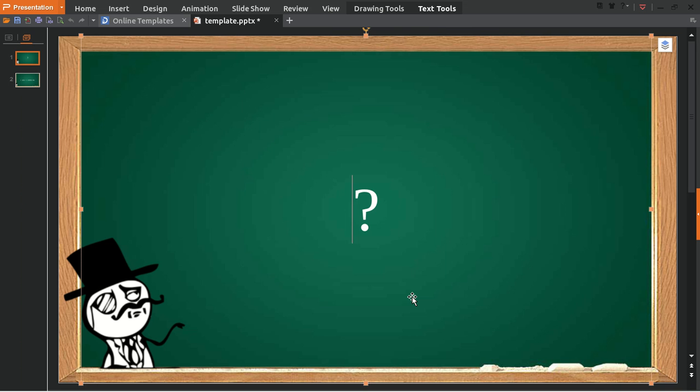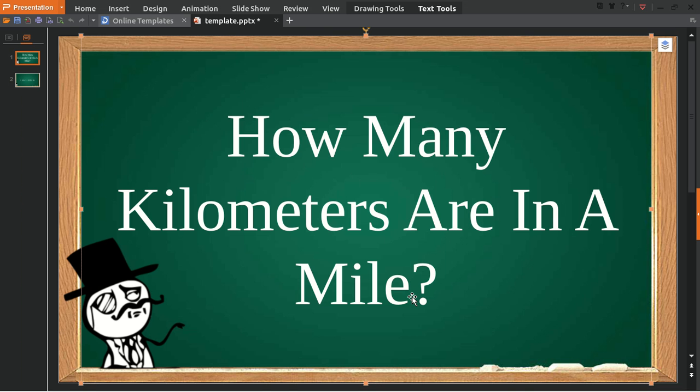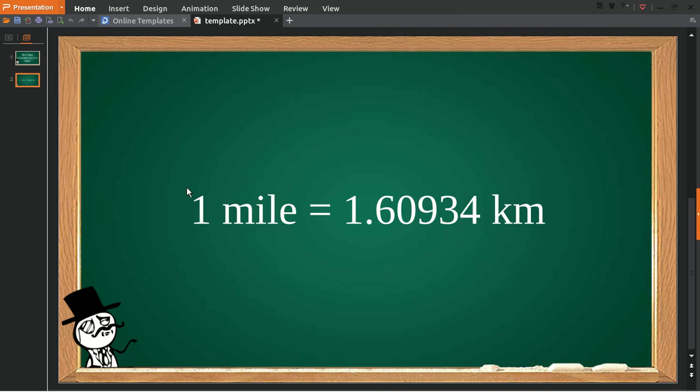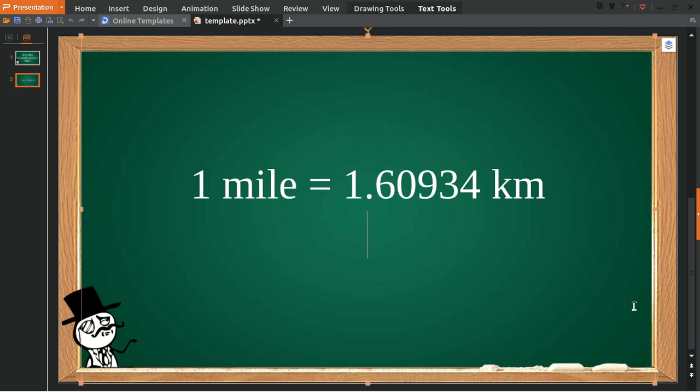Hello, how are you today everyone? In today's video we're going to answer a short question about how many kilometers are in a mile. To answer this question, I have provided you an answer: one mile is equal to 1.60934 kilometers.